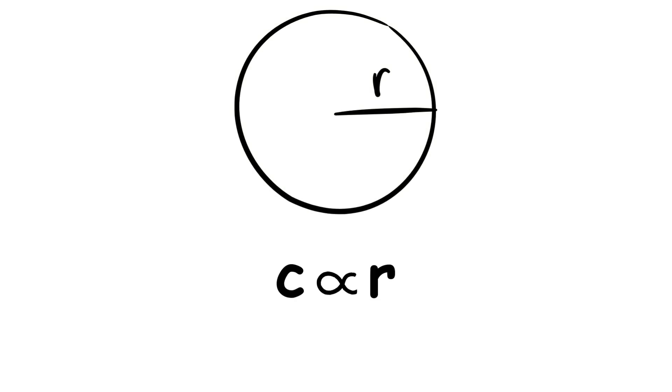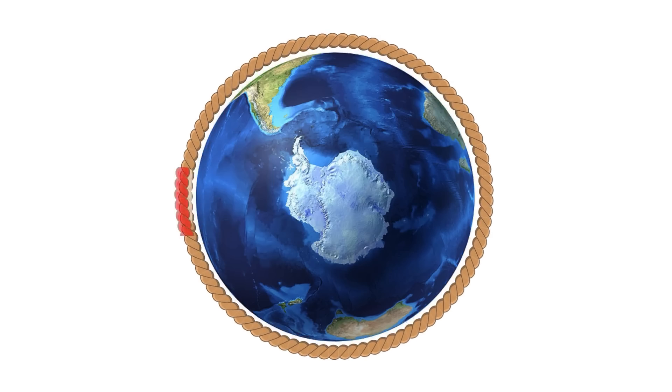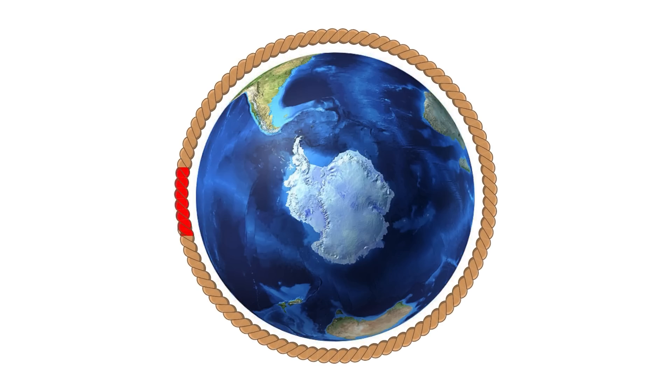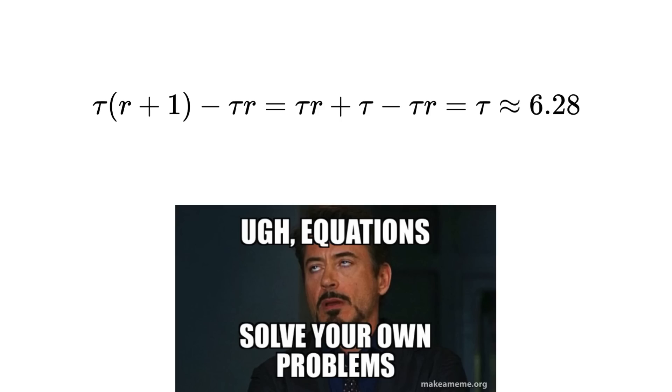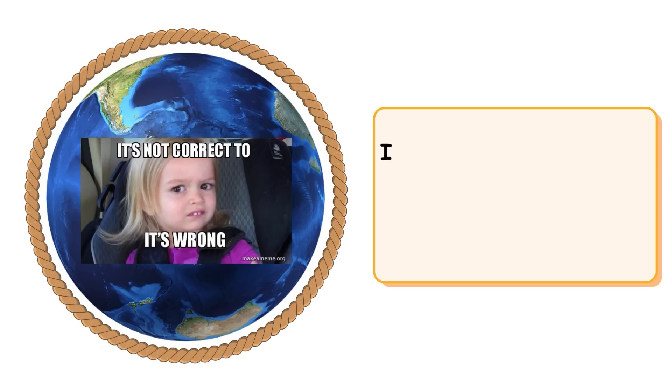So, no matter the radius of Earth, lifting the string by 1 meter causes a length increase of tau meters, or about 6.28 meters. We can also prove it algebraically, like this. Thus, in order to lift the whole string up one meter, you would need to add about 6.28 meters of string.